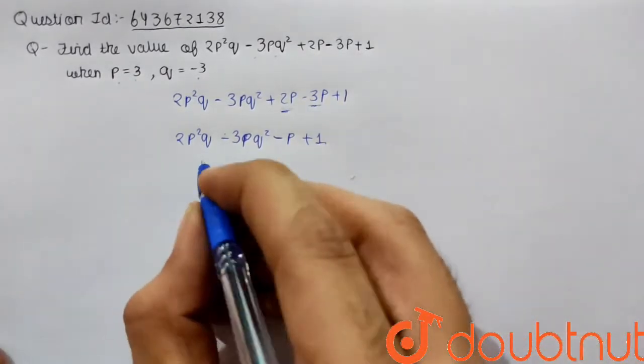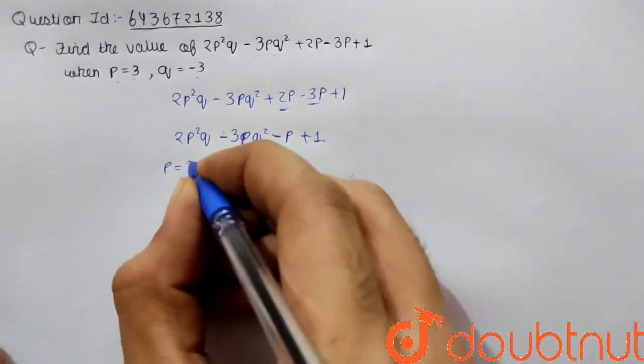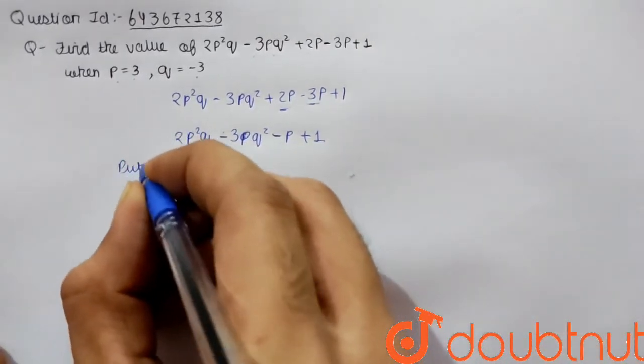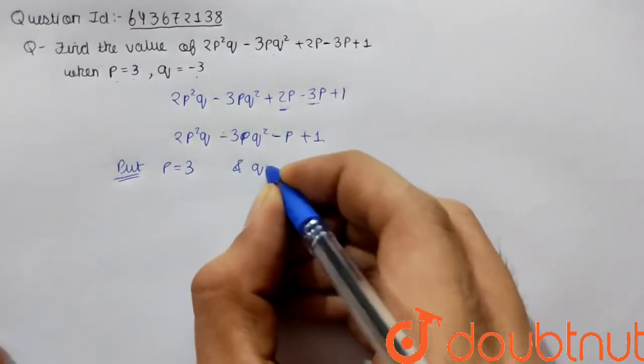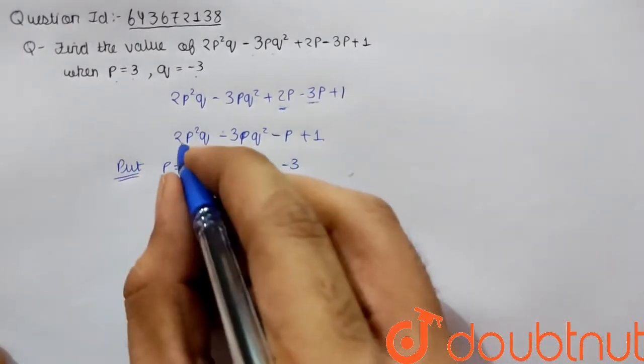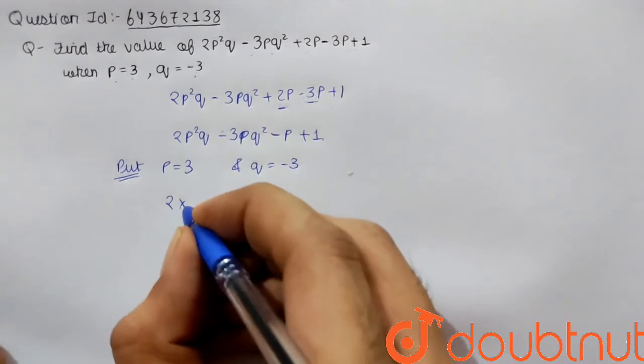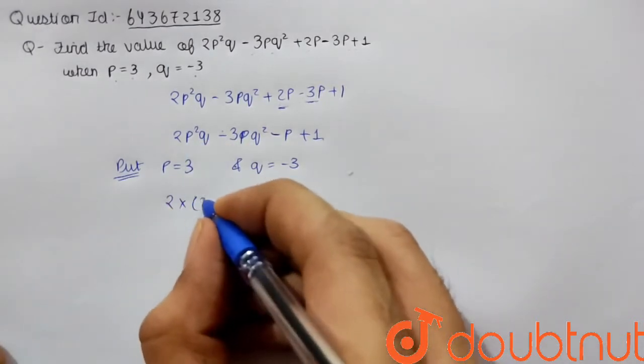Now we can put p equals 3 and q equals -3.